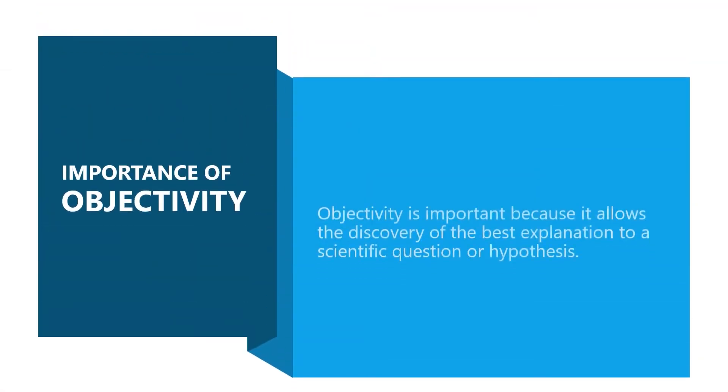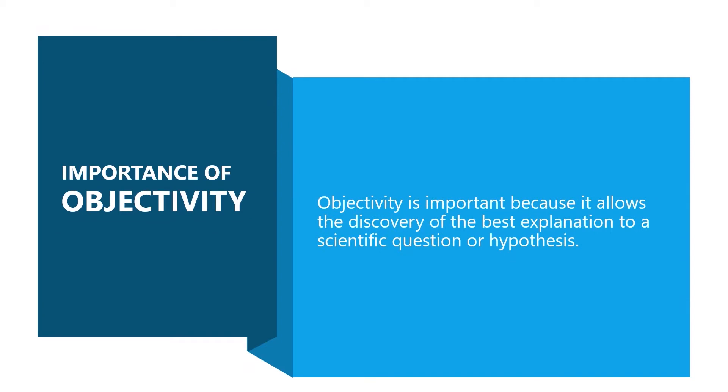Objectivity is important in science because it allows the discovery of the best explanation to a scientific question or hypothesis. Objectivity is maintained by allowing evidence and not personal bias or desires to answer scientific queries.